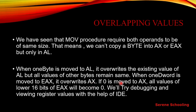If 0 is moved into AX — that is, into the lower half of the EAX register — all values of the lower 16 bits of EAX become 0. Only AX is updated. The upper half of EAX remains as it is, and only AX, which is the lower half, becomes 0. This is the concept we need to understand.